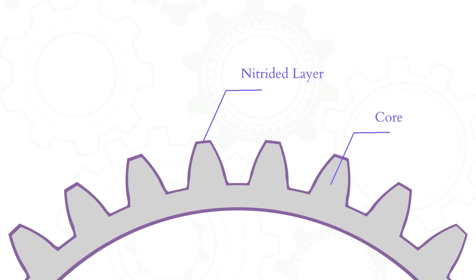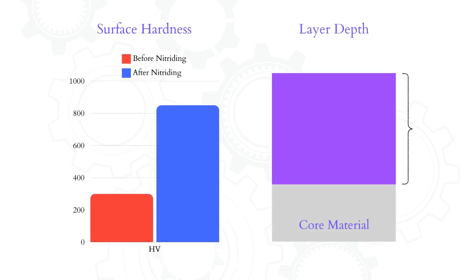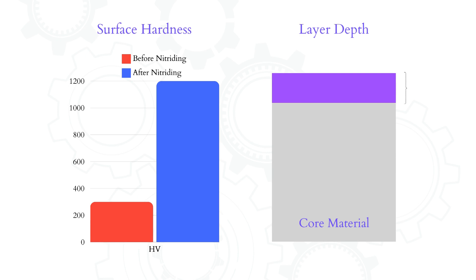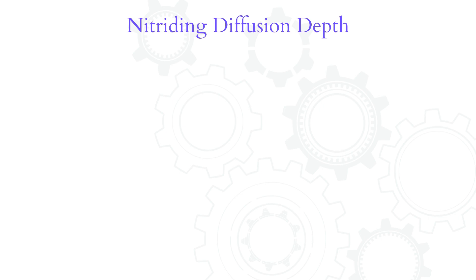Let us return to our gear example and see how the nitrided layer looks in a cross-section. Some steel grades are more suitable for plasma nitriding than others and will therefore achieve better results. This is due to the alloying elements present in the steel — some elements are better nitride formers. However, too many alloying elements might mean lower diffusion depth, so a balance must be maintained. For example, in stainless steels, the high percentage of chromium contributes to high surface hardness but also impedes nitrogen diffusion in depth.